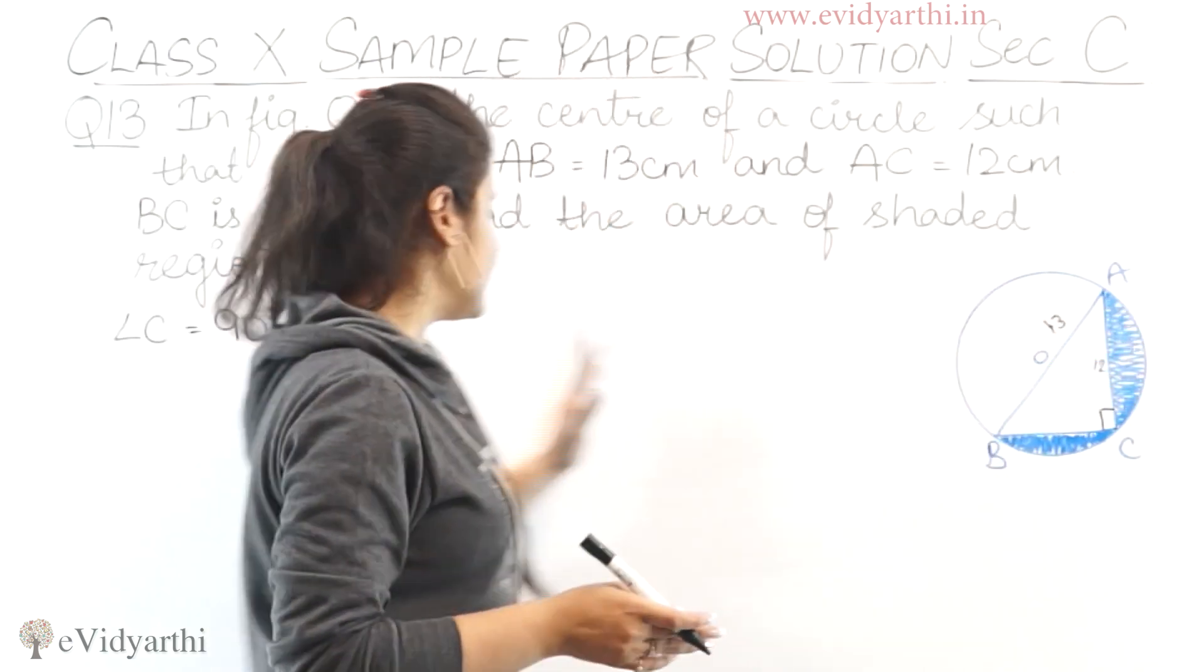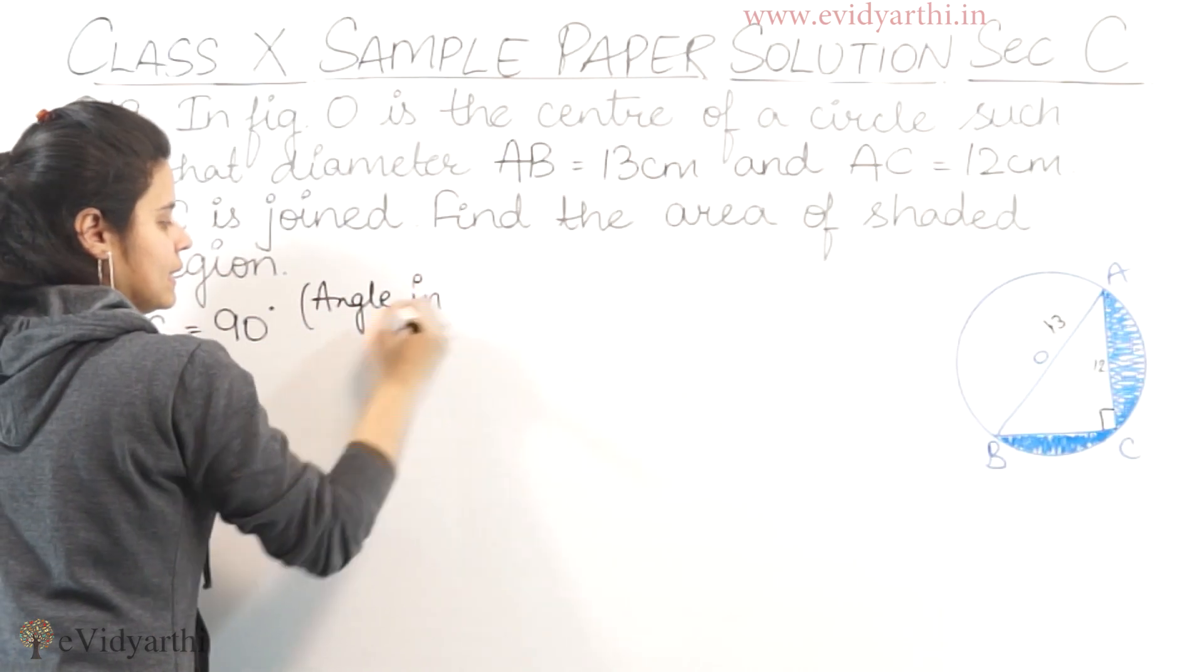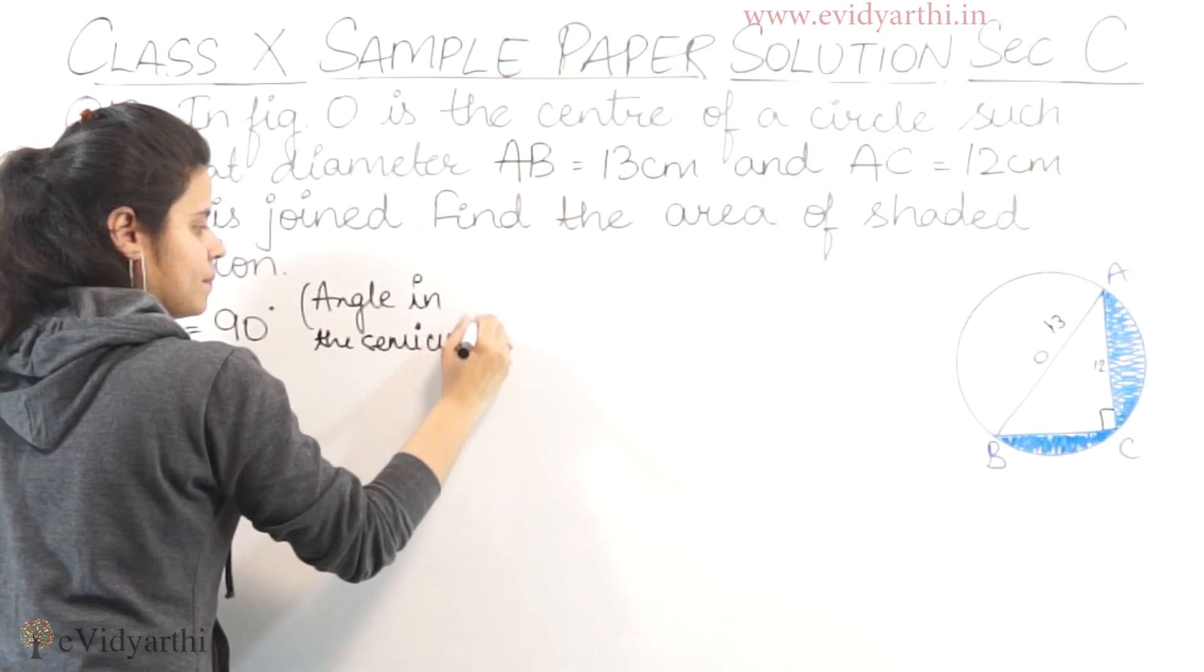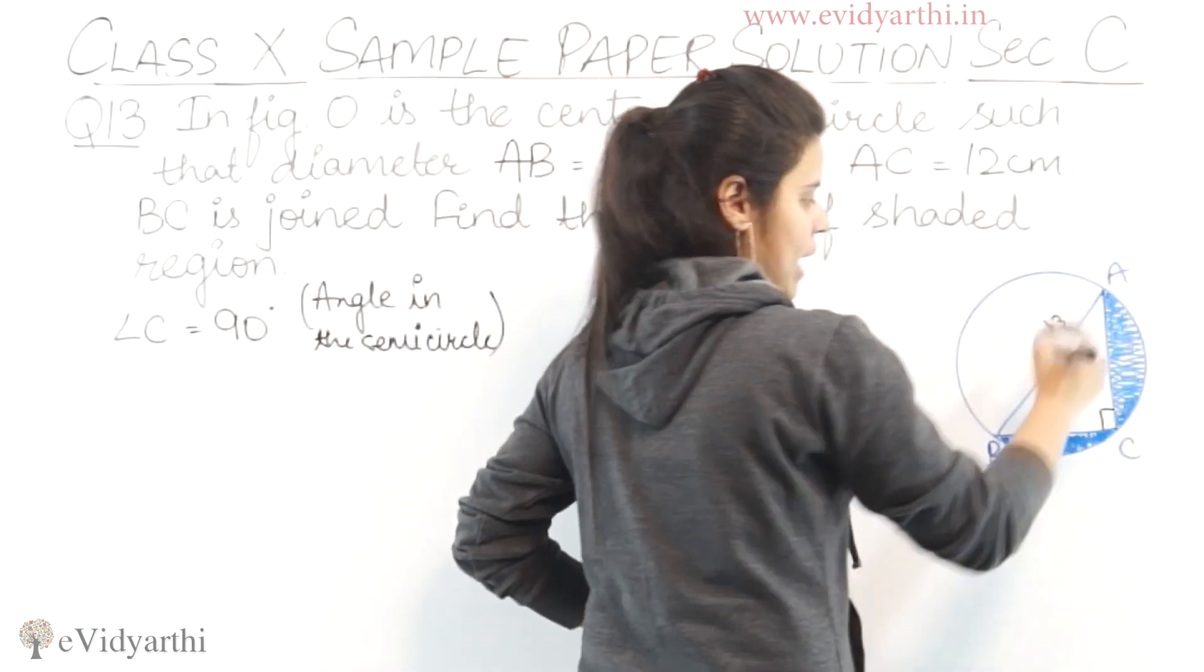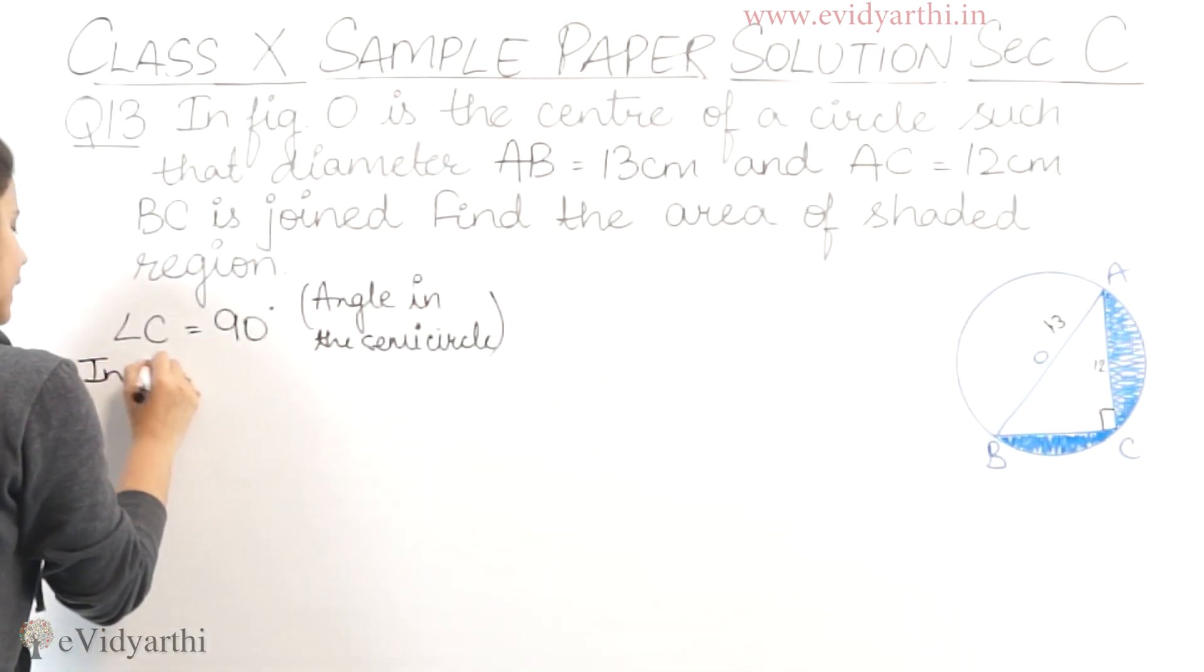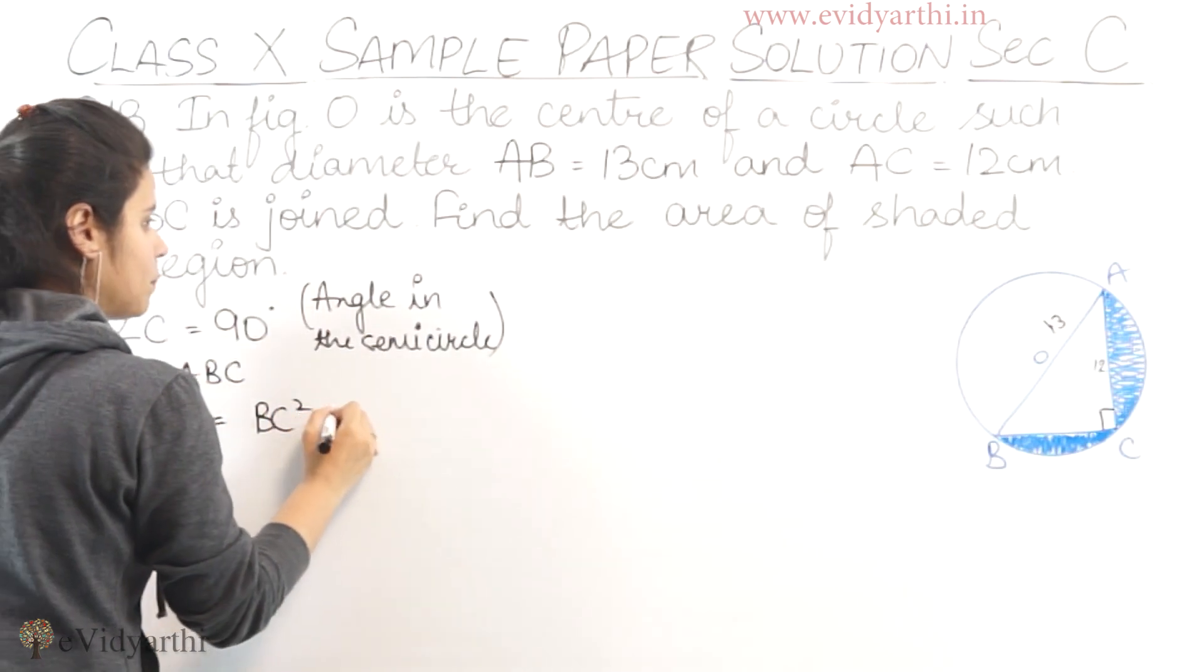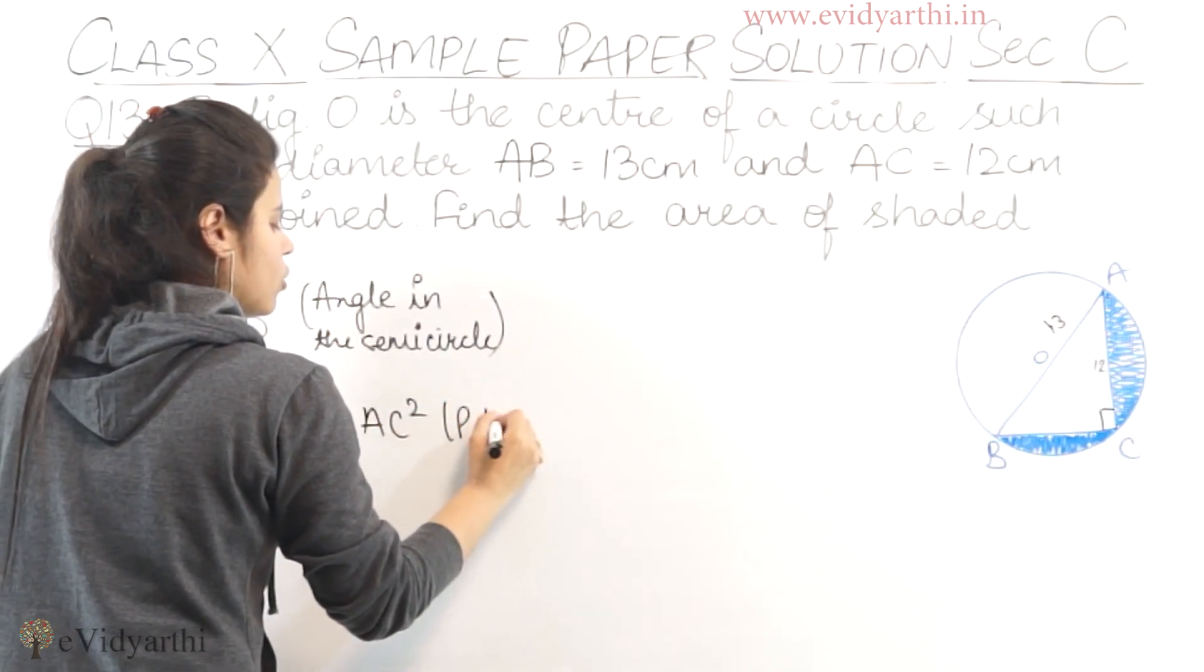This is a semicircle, so angle C is 90 degrees. Now we can write that in this right angle triangle, AB² will be equal to BC² plus AC². This is by Pythagoras theorem.